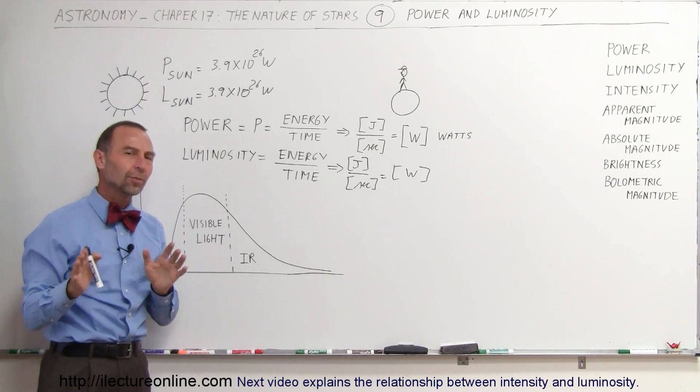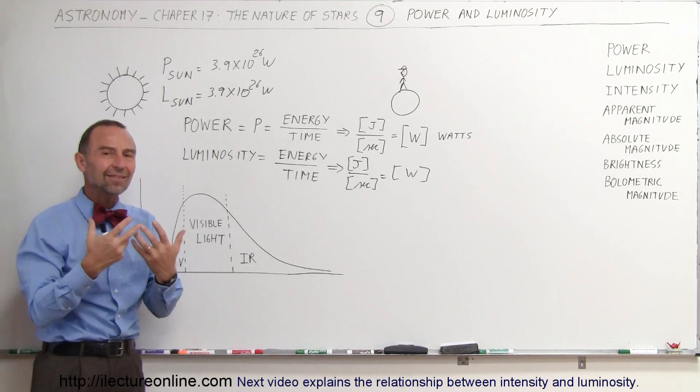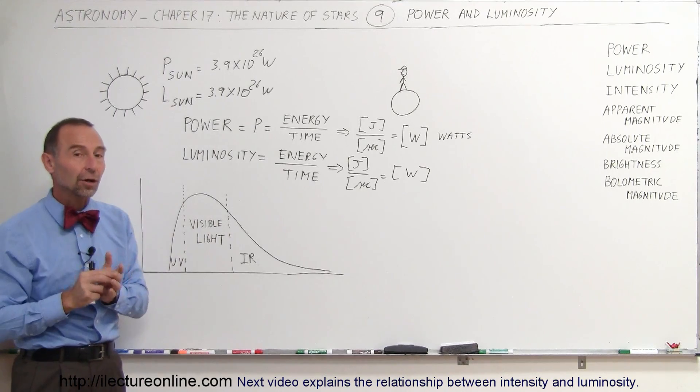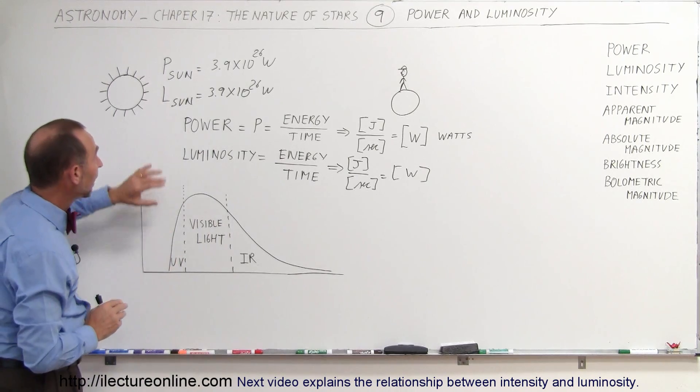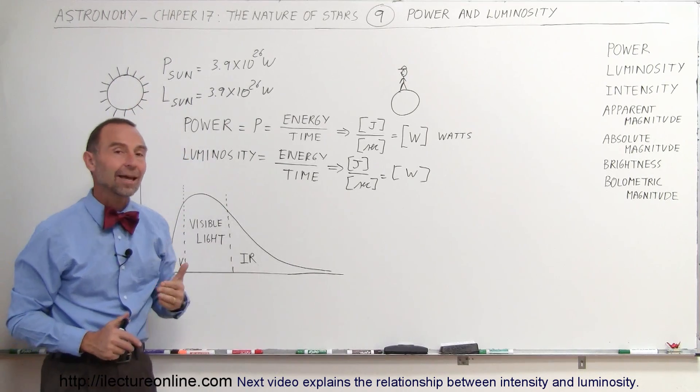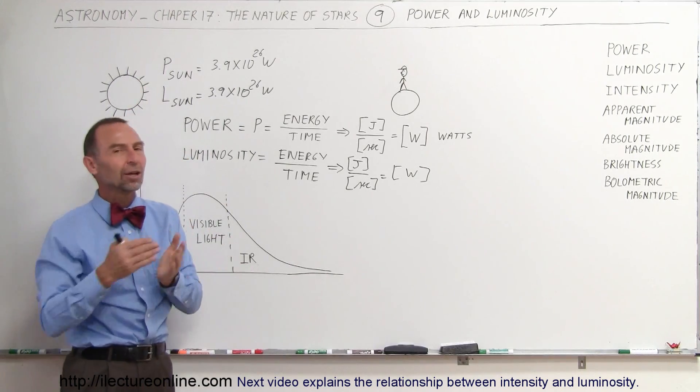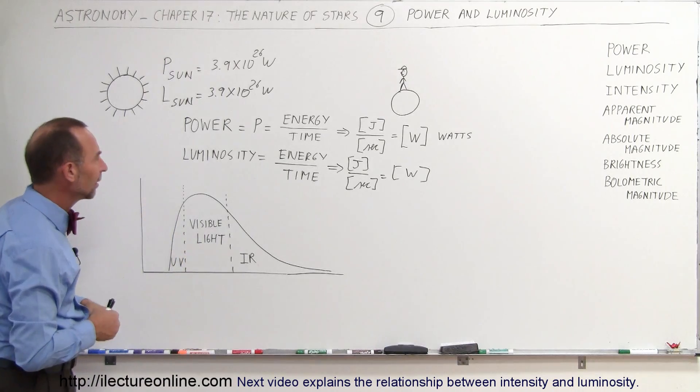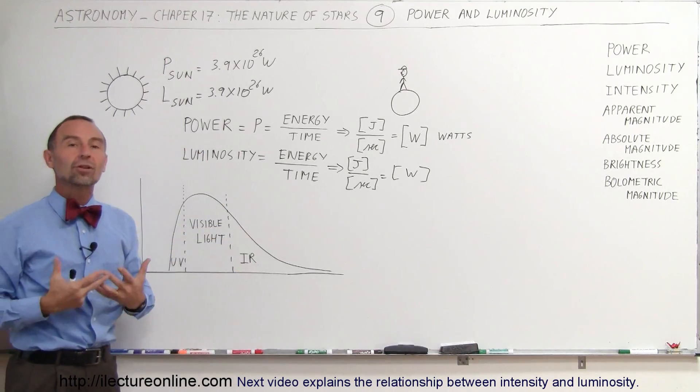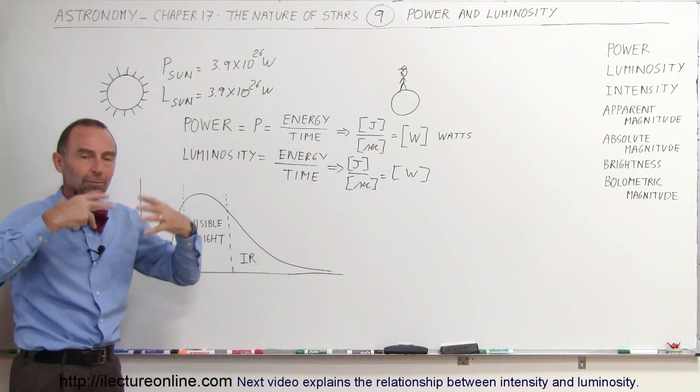Well that has to do with something different, that has to do with the intensity of the energy that we receive, and we'll talk about that in our next video. Here we just have to realize that power and luminosity, in essence, is exactly the same thing. We use power in physics, luminosity in astronomy, and it's simply how much energy an object puts out per unit of time, how many watts that object puts out.